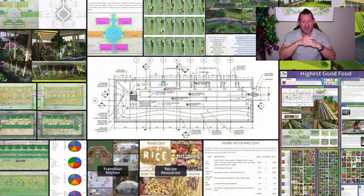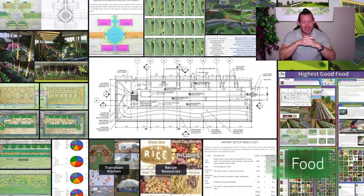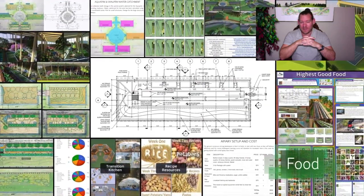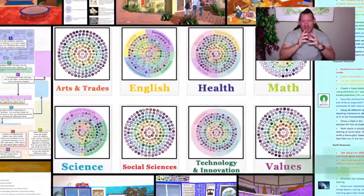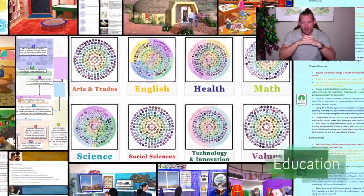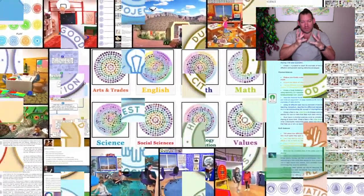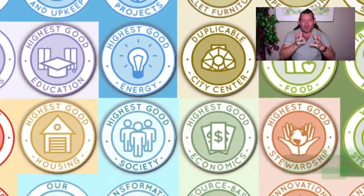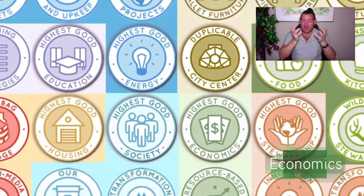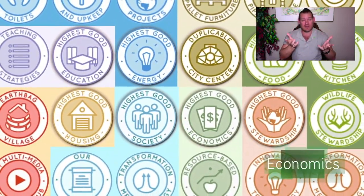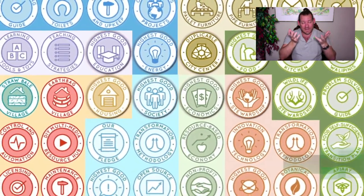One Community is bringing together people with the consciousness and the desire for the highest good of all life on this planet to build sustainable and self-replicating teacher demonstration hubs as a pathway to global sustainability. This is our March 29th, 2020 edition of our weekly progress update, and today's topic is blueprints for global cooperatives — working together for sustainability and the highest good of all life on this planet.